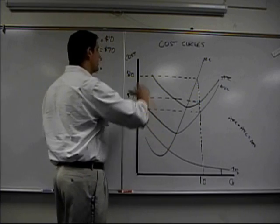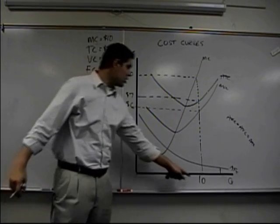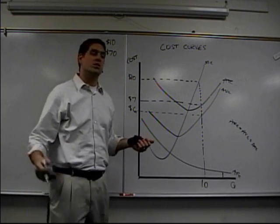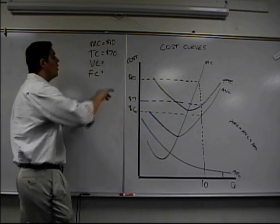For your variable cost, we just go up until you hit the AVC. On average, 10 units cost me $6 to produce. Well, that means 10 total must cost 60.